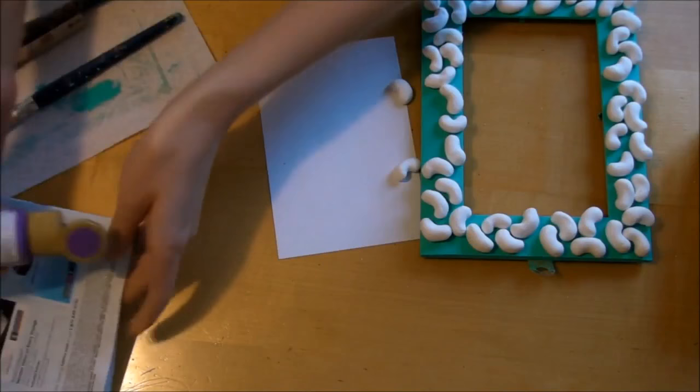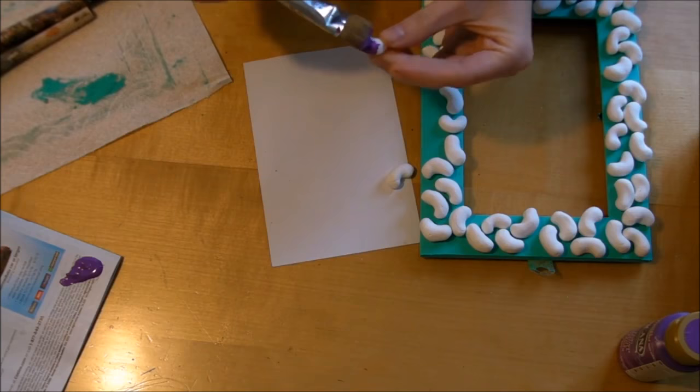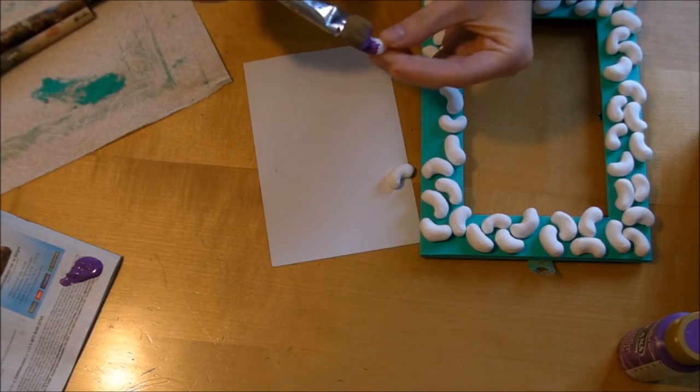So now I'm going to paint the jelly beans. This part can get a little bit messy, so make sure to have plenty of paper towels nearby. I'm just going to divide the number of jelly beans that I have into the number of paints that I have. So for me, I had about five or six colors of paint, so I'm going to paint one-fifth of the jelly beans each color.